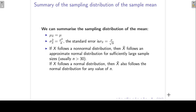In the previous lecture we concluded with a summary of the sampling distribution of the mean. The mean of the sampling distribution is the same as the population mean. The variance of the sampling distribution is the population variance divided by n, so it decreases as the sample size increases. The standard deviation of the sampling distribution is called the standard error.